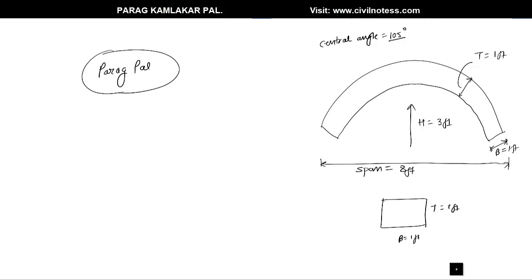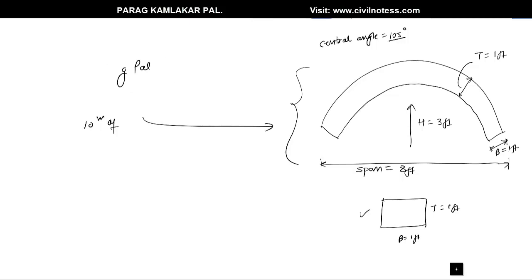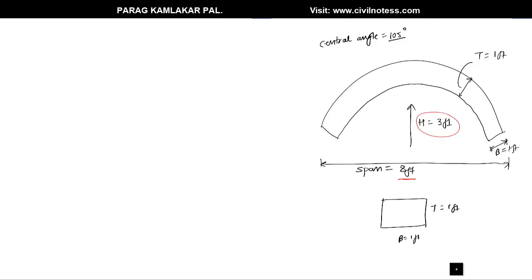In this video I am going to discuss how to determine the volume of a segmental arch. Here the diagrammatic representation shows the segmental arch, and this block represents the cross-sectional area of the segmental arch. The given data is: span of arch = 8 feet, height of arch = 3 feet, thickness of arch = 1 foot, breadth of arch = 1 foot, and central angle of arch = 105 degrees. We need to calculate the volume.